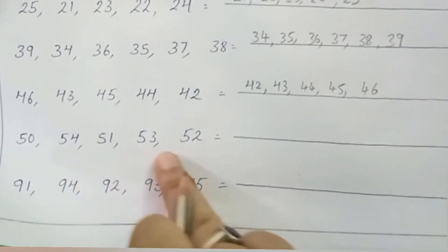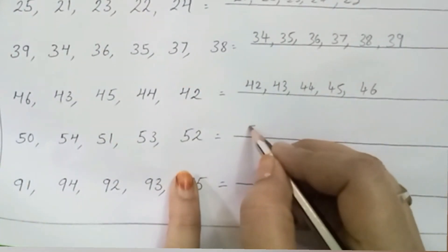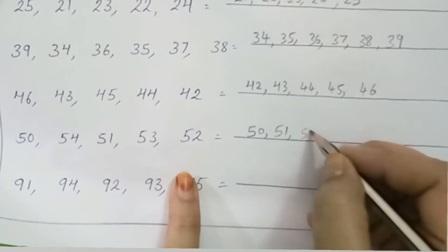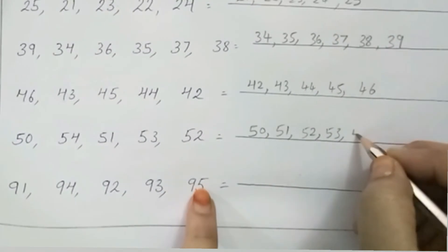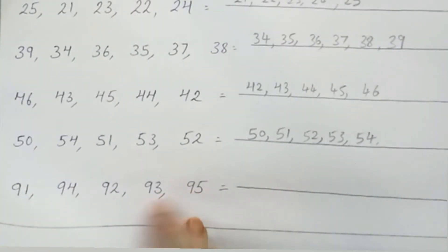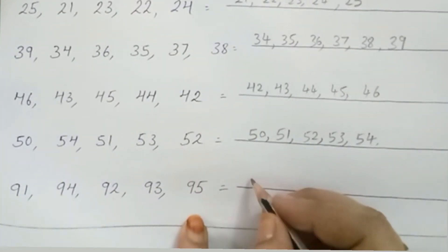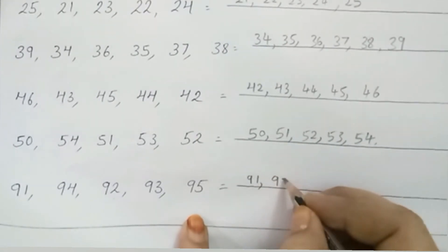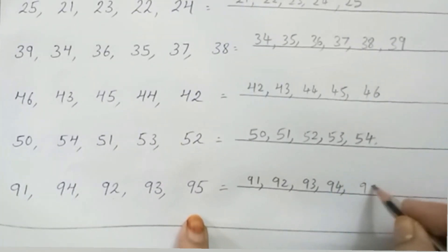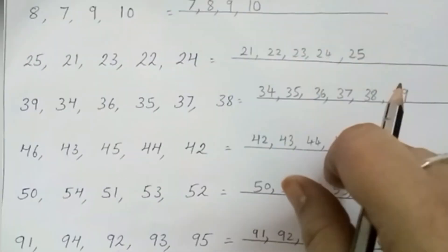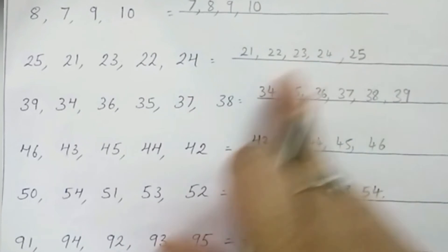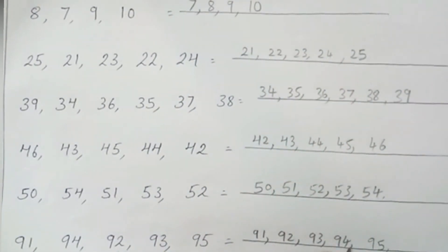Next line. Which is the smallest number children? 50. So you have to write here 50, then 51, 52, 53, and 54. So you have to write small to big. Understood children? Keep on practicing children.